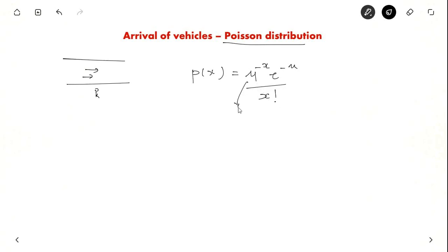Here nu is nothing but the flow rate. How many vehicles per hour? And X is probability of X. The probability of X is the probability you will see X vehicles in unit time.